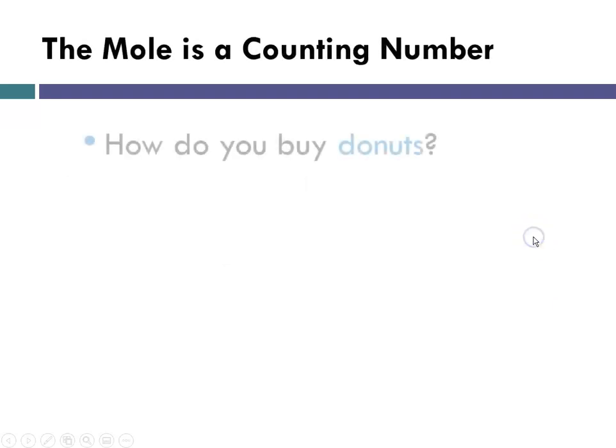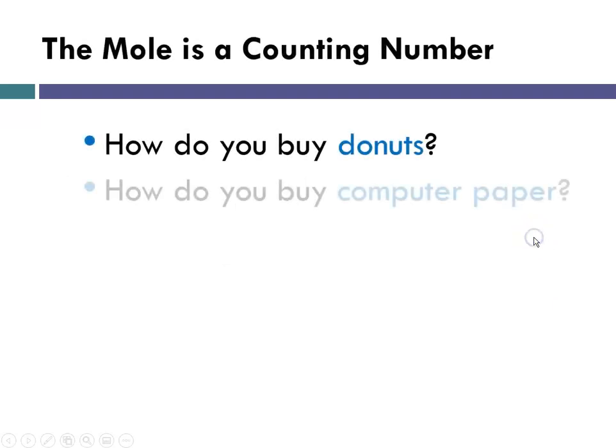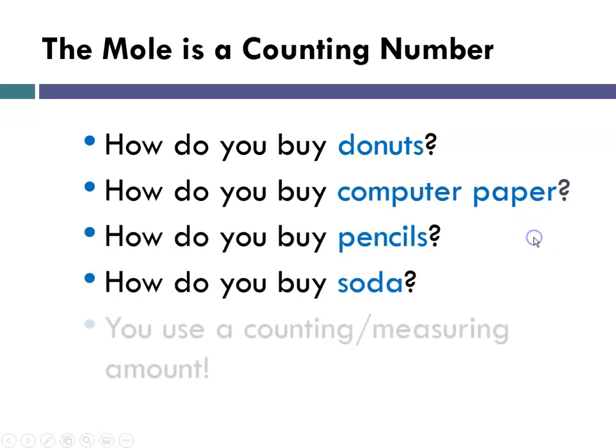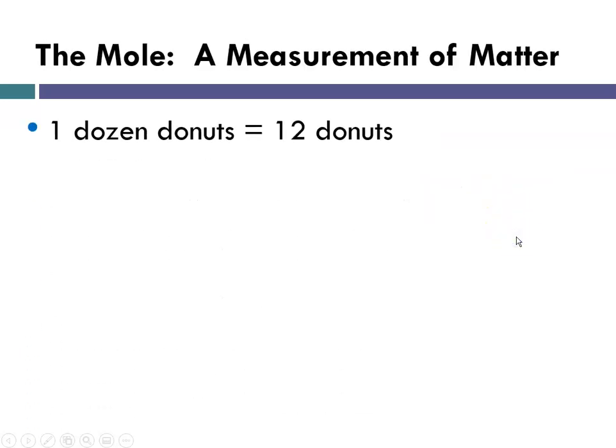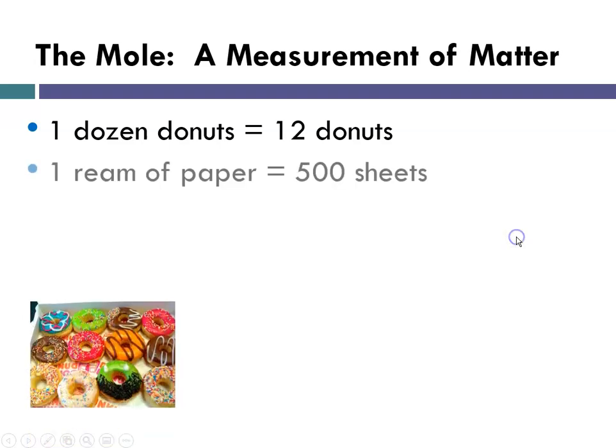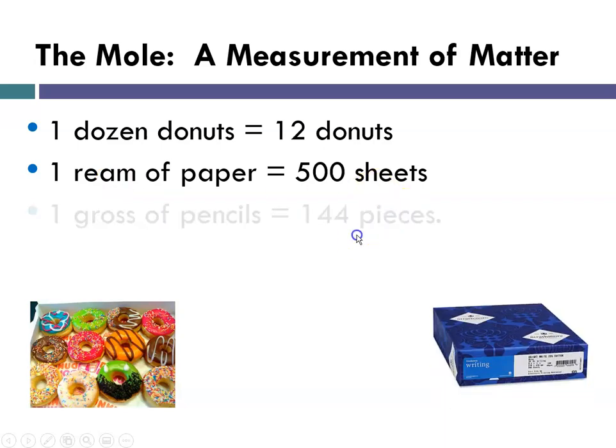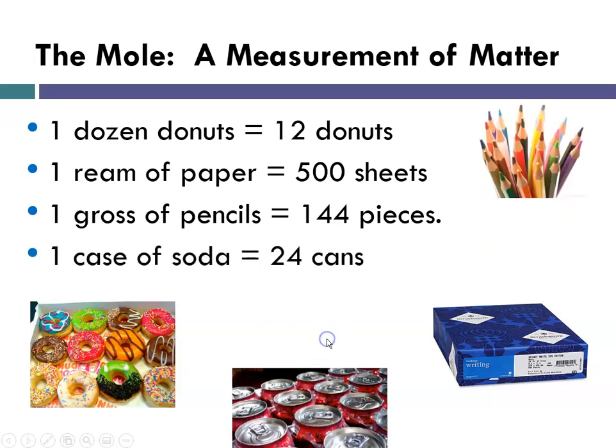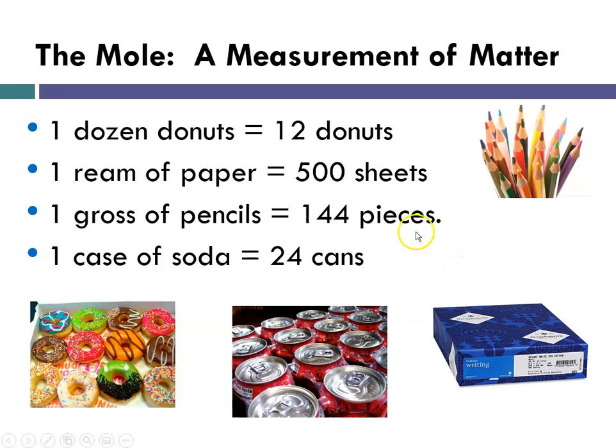So the mole is a counting number. So how do you buy doughnuts? How do you buy computer paper? How do you buy pencils? How about soda? You use a counting measuring amount. For instance, a dozen doughnuts is 12 doughnuts. That's a counting number. A ream of paper, ream means 500 sheets. A gross of pencils means 144. And a case of soda is equal to 24 cans. So all of those are examples of counting measures.